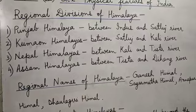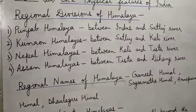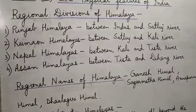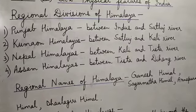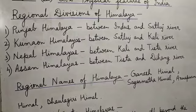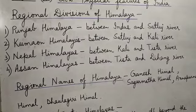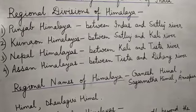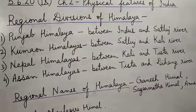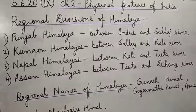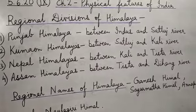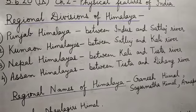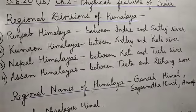The general elevation falls westward, towards the west. Next is the Kumau Himalaya. The part of Himalaya which lies between Satlaj and Kali river is known as Kumau Himalaya. The Kumau Himalayas lie in Uttarakhand and extend from the Satlaj river to the Kali river.